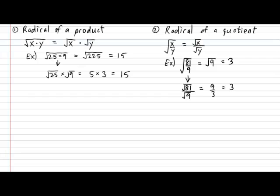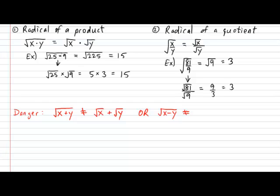There is one huge danger associated with the properties of radicals. In danger color, put down this warning: some people believe that √(x + y) can be rewritten as √x + √y. This is completely false — there is no such property. The same goes for subtraction: √(x − y) cannot be rewritten as √x − √y. Here is the proof of this danger.